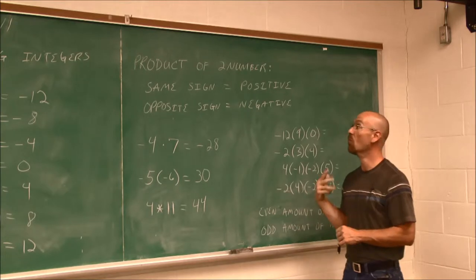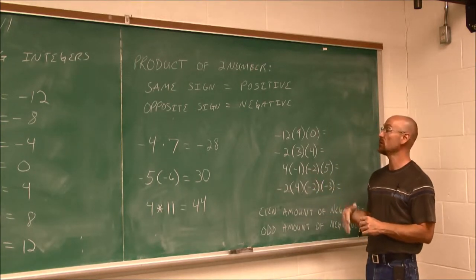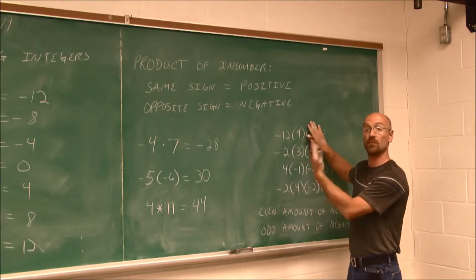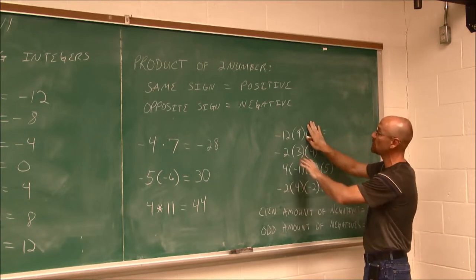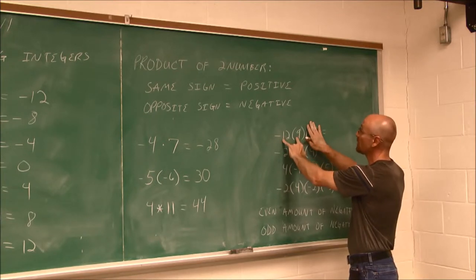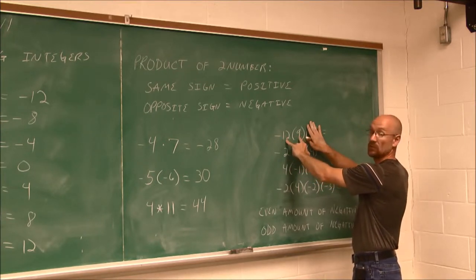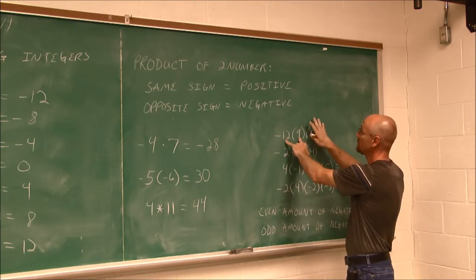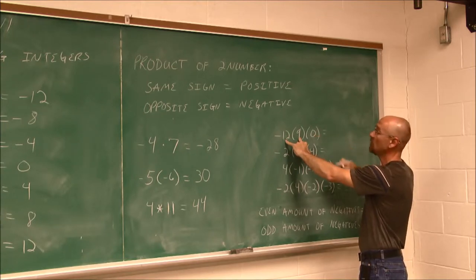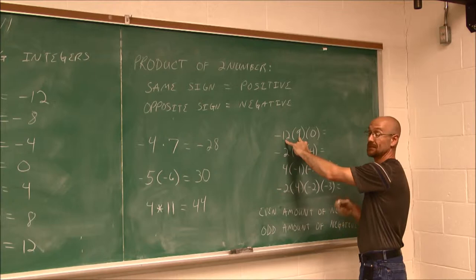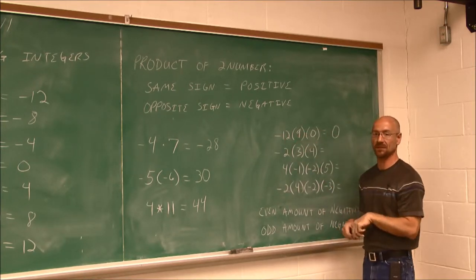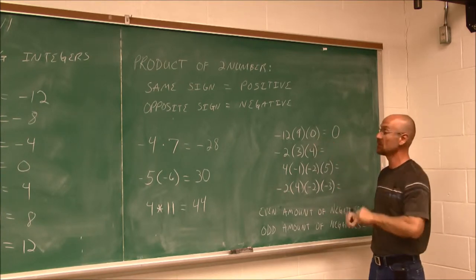What happens when we have more than two factors — three or more? We could take it one piece at a time. Our order of operations says we work left to right. These two have different signs, so the value would be negative — 12 times 9 gives 108. Then 108 times 0 is 0. Zero is neither positive nor negative, and 0 times anything is 0. If we identify that 0 first, remember the associative property.